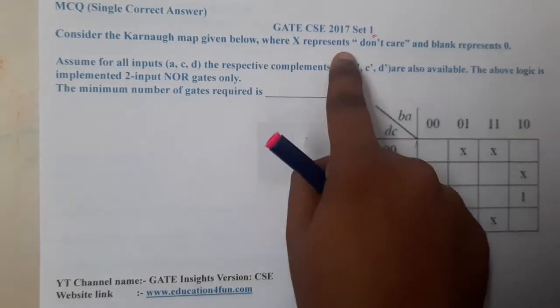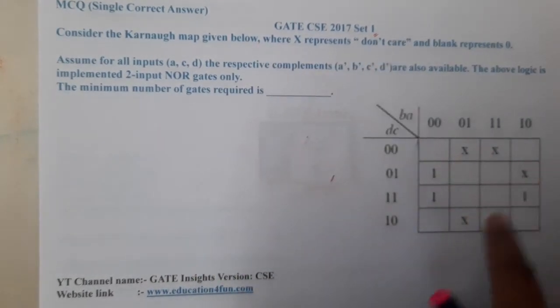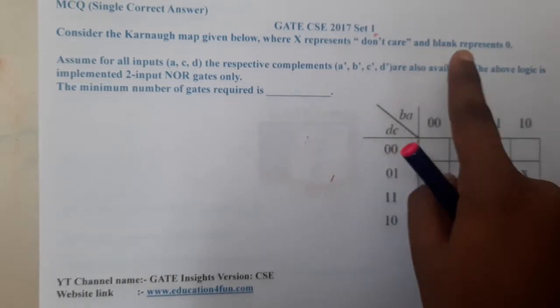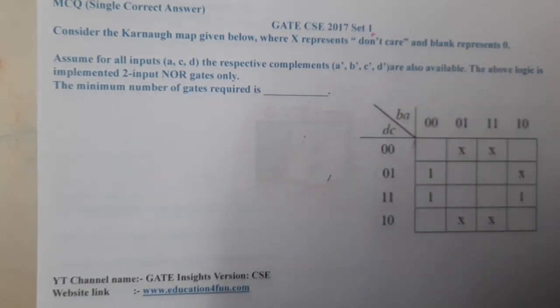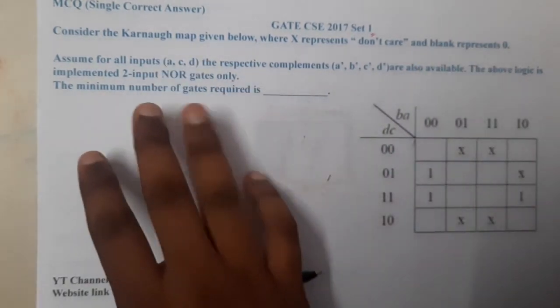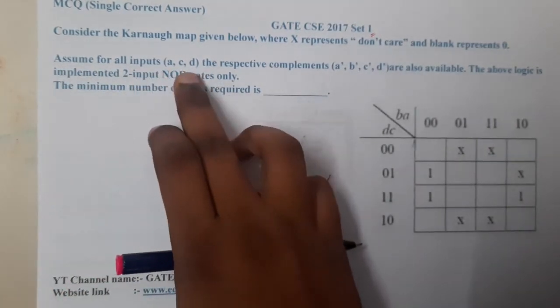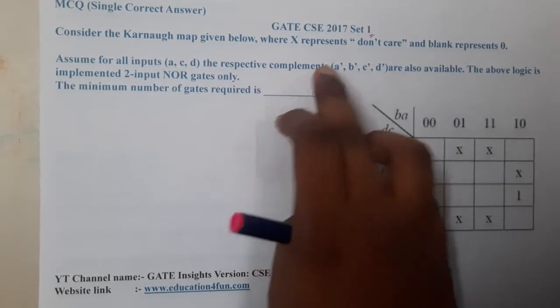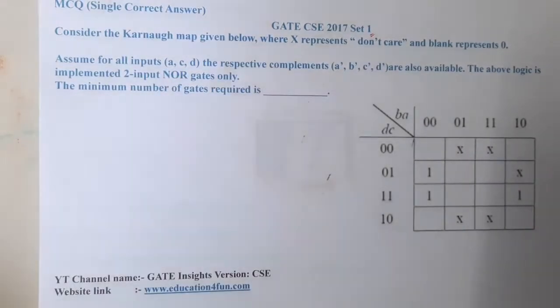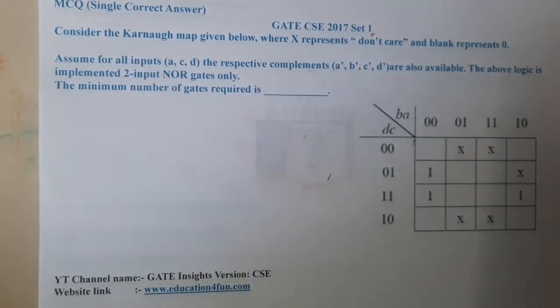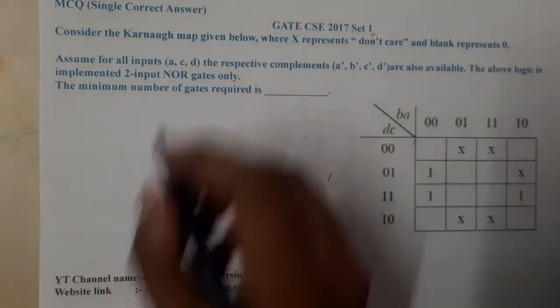given below, where X represents don't care conditions and blank represents 0. Assume for all inputs—just give me a second, it's a, b, c, d, right? Just give me a second, I'll be cross-checking. I think it's a printing mistake. Yes, it is a, b, c, d.